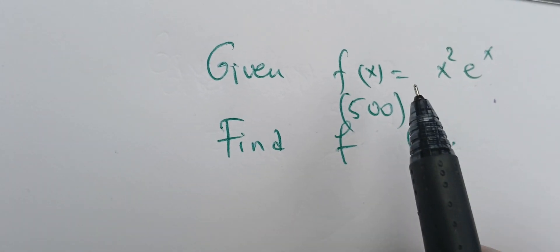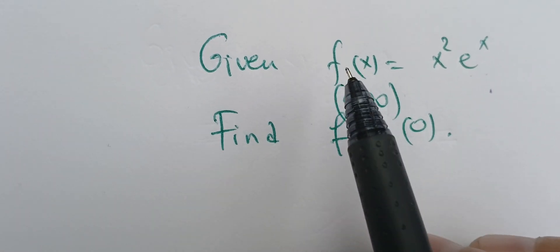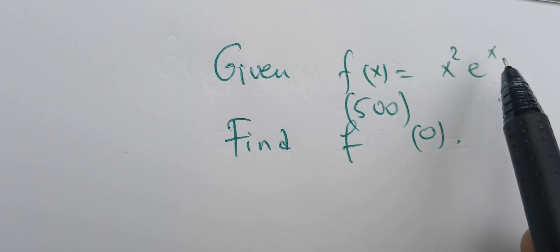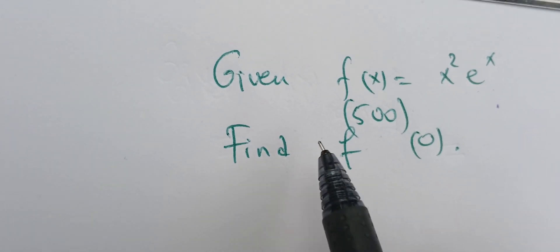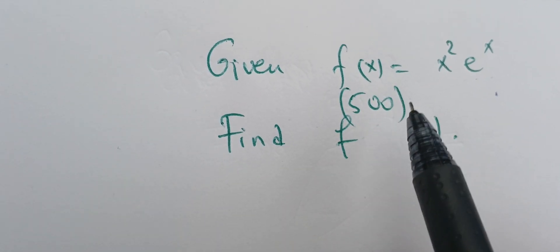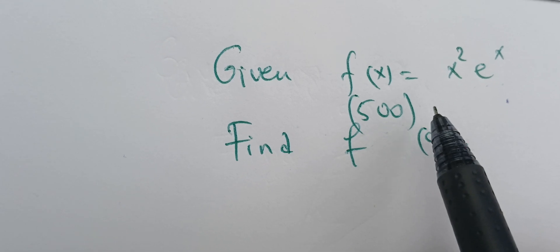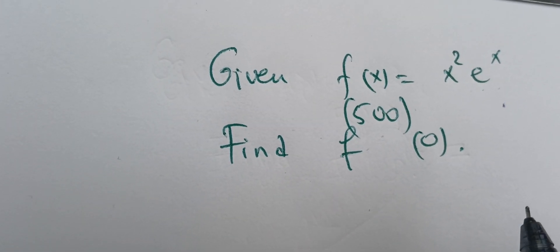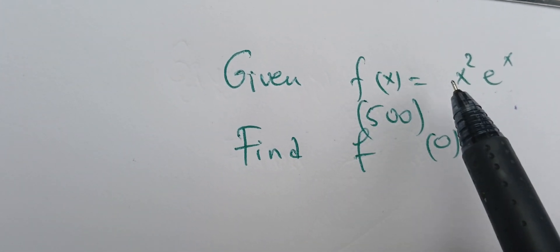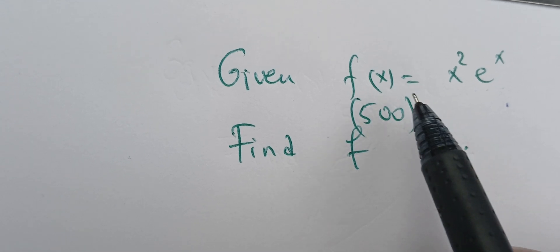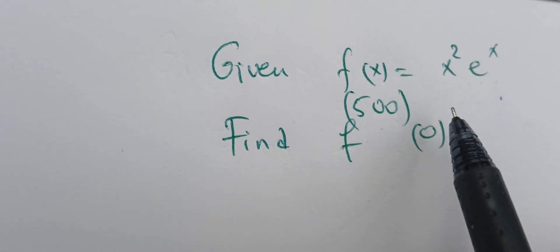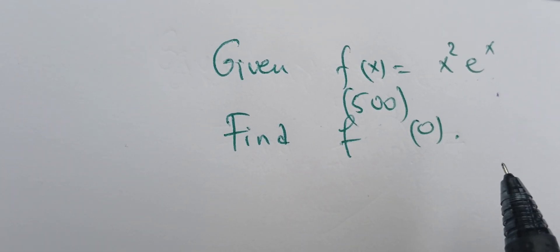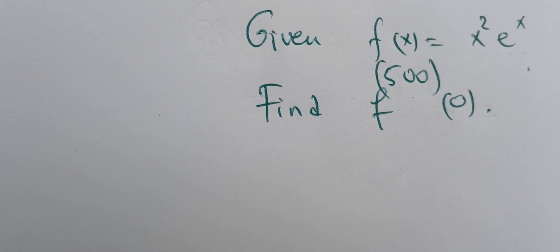Welcome back. In this video, we are given the function f(x) = x²eˣ and we want to find the derivative of order 500 at zero. This means that we need to differentiate f(x) 500 times and evaluate at zero.